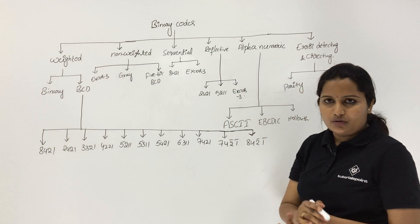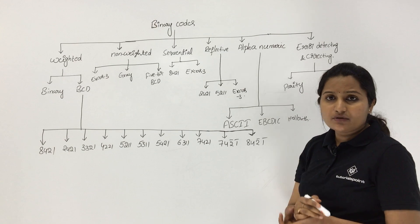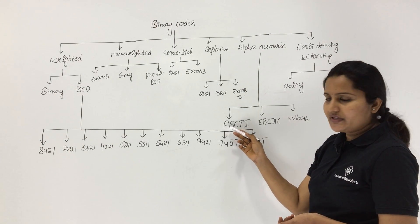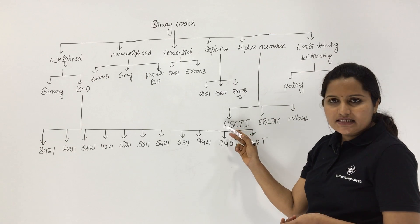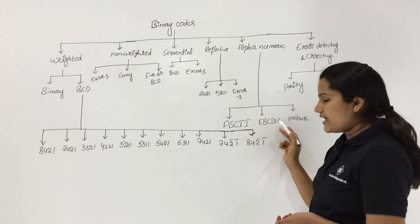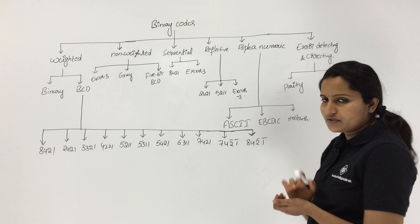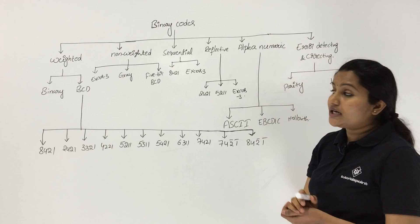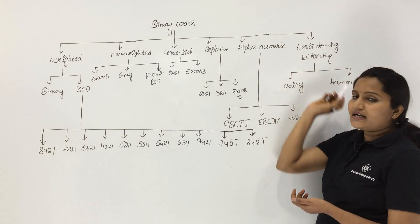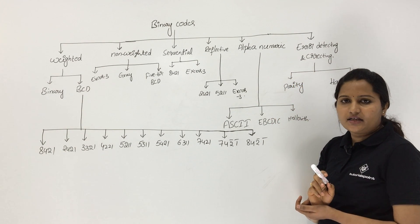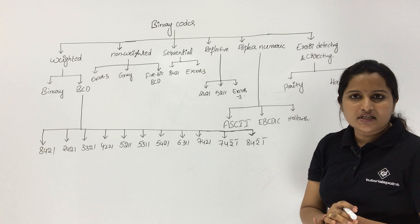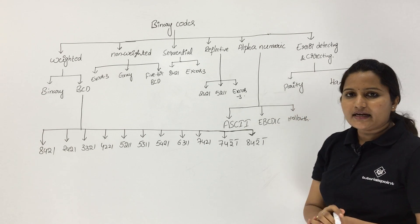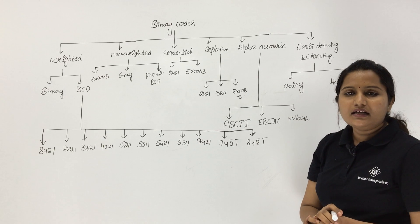Alphanumeric codes include alphabets, and under this we have three codes: ASCII and EBCDIC. The last classification under binary codes is error detecting and correcting codes. These are widely used in communication and are divided into parity and Hamming codes.